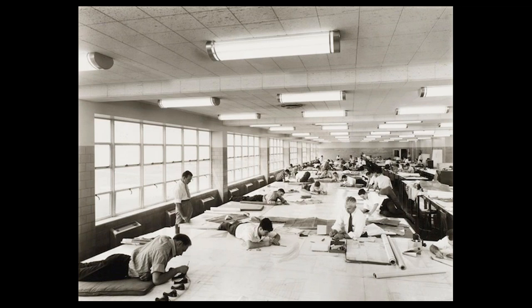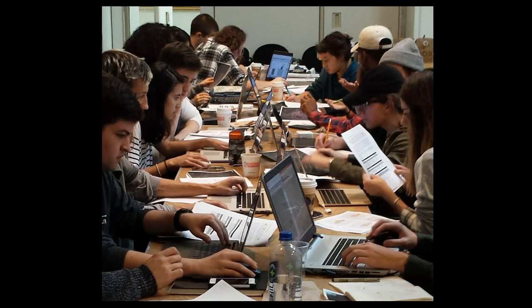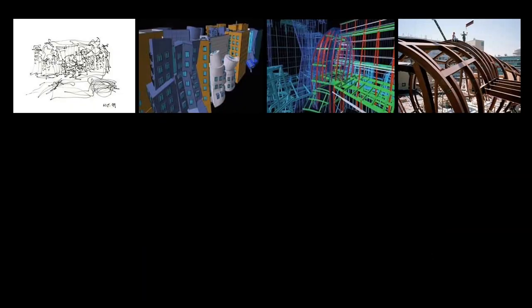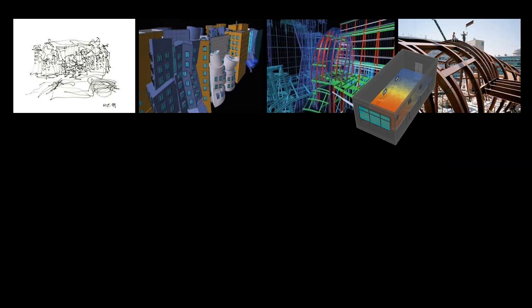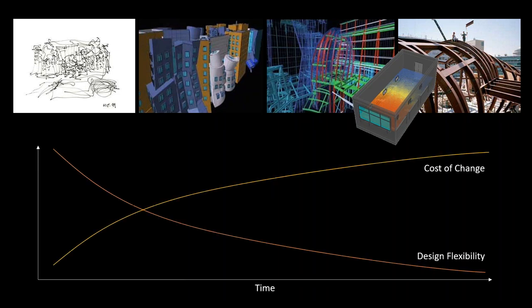Today, the designs that we make are digital from start to finish. Students work on a project where they make a design, test it using building simulation tools, and then work on the design iteratively. Our models go from very simple to very complex until we get to the real building. Traditionally, when we've been able to run simulations, that has fallen toward the end of the design process. At that point, we have very little ability to make changes, and the cost of those changes is very high.